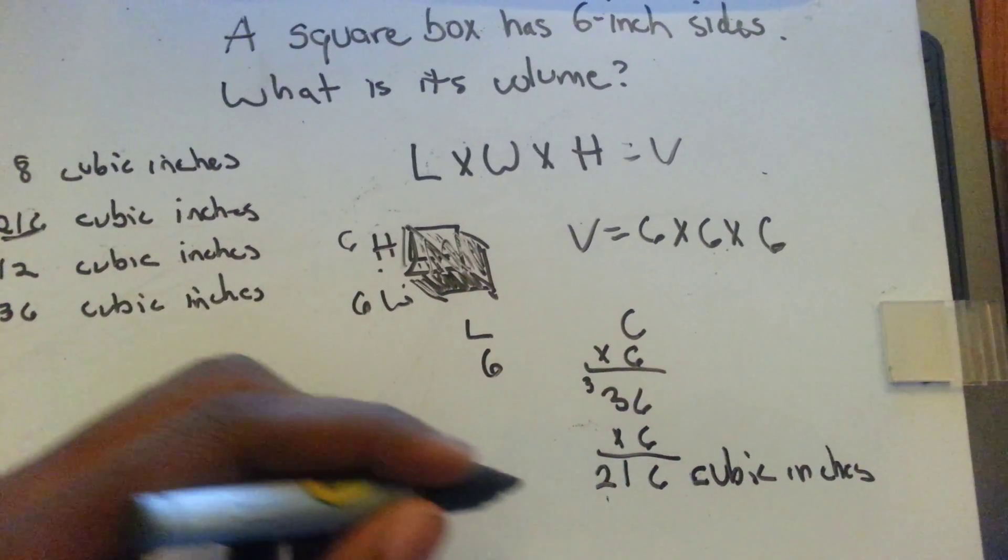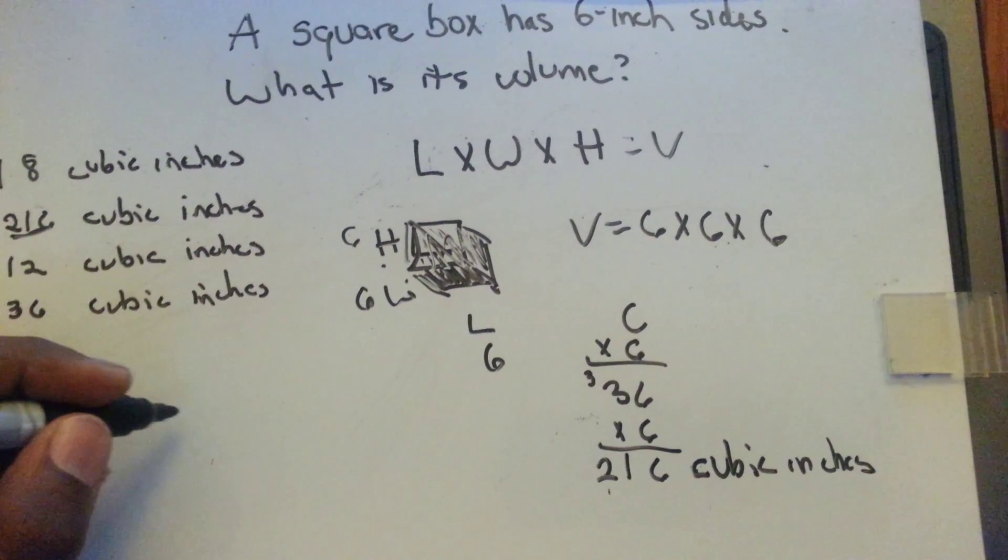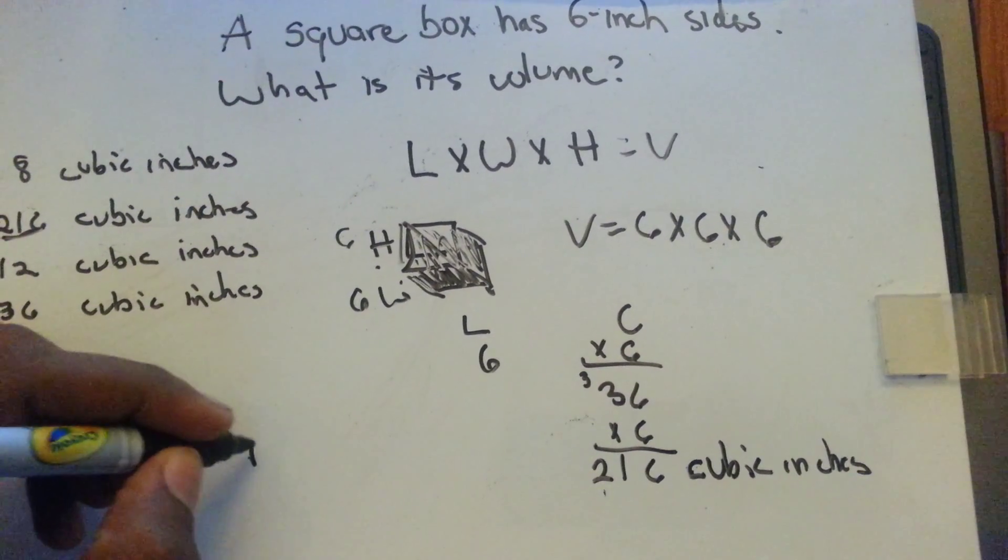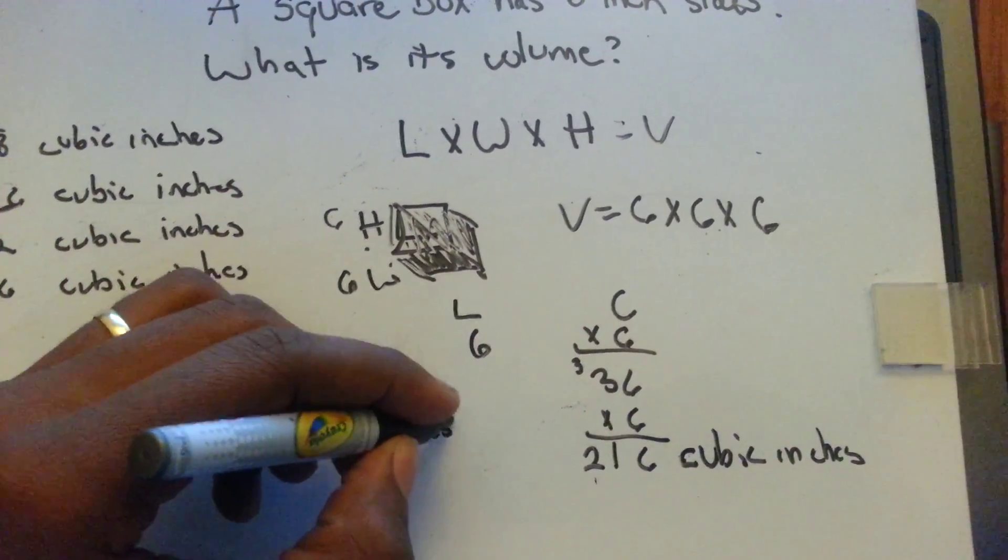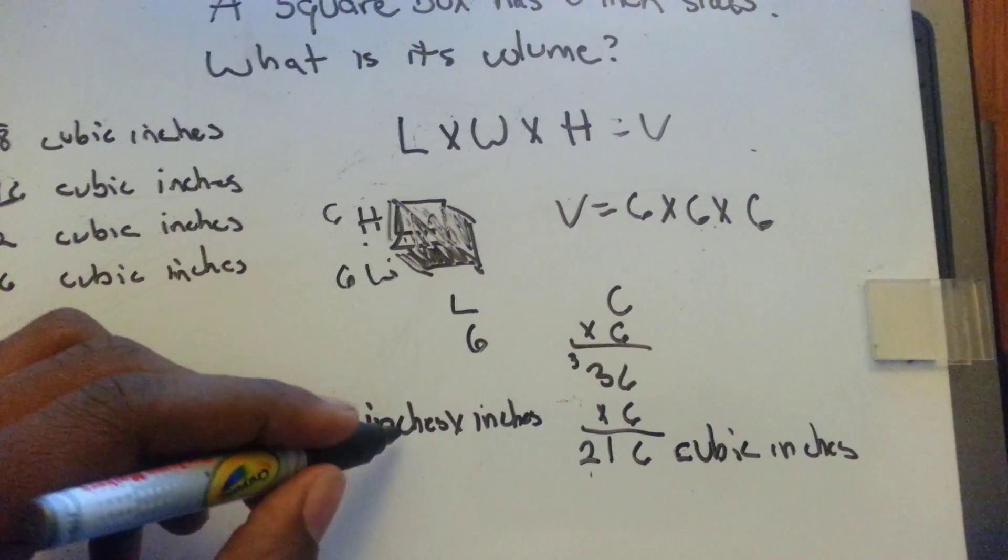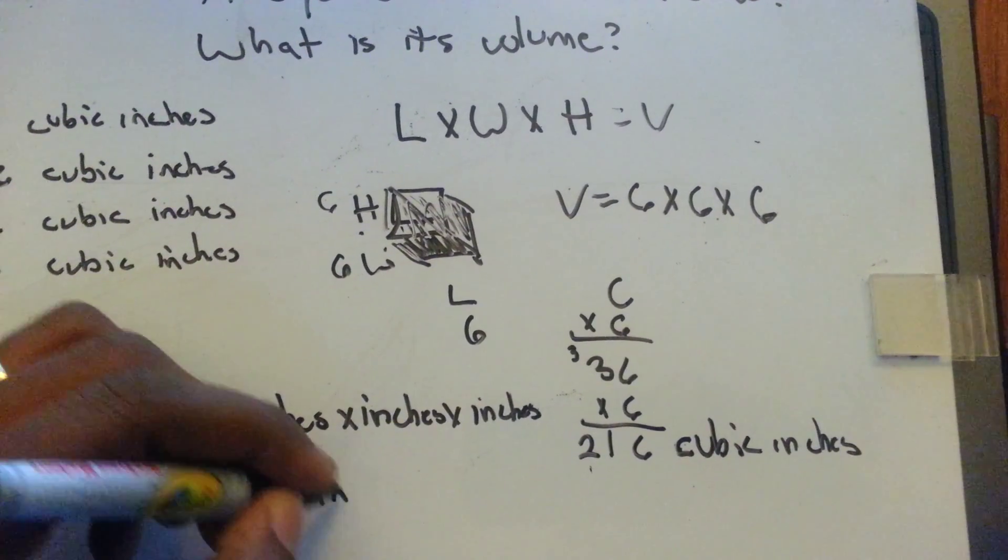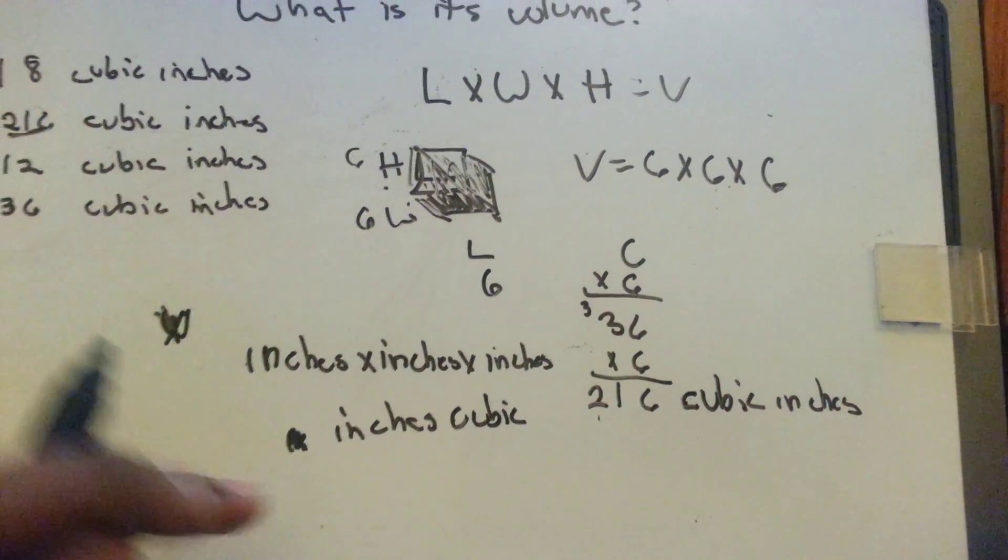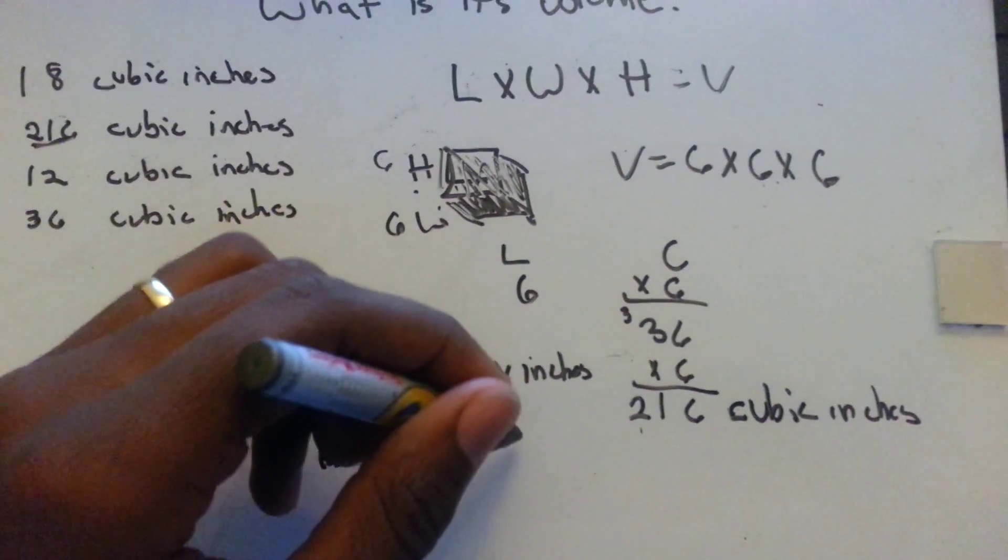So cubic inches, that cubic, the term cubic means times three since you're multiplying inches times inches times inches. You have three sides, that is one, two, three, so you have inches, inches, inches cubed.